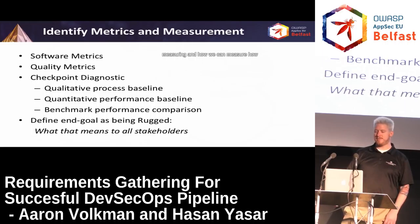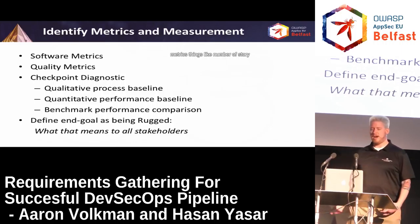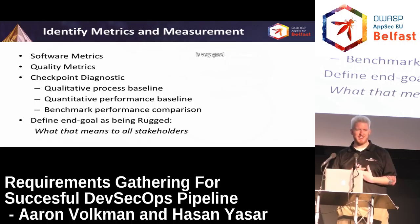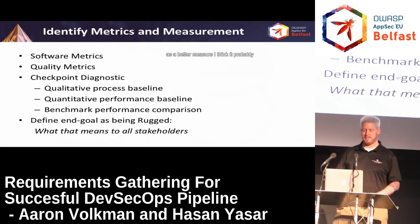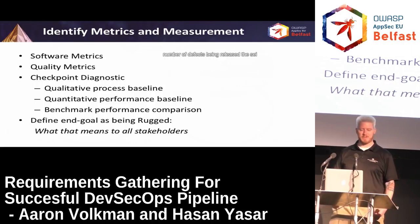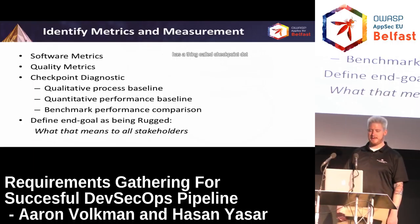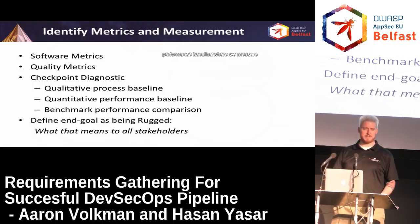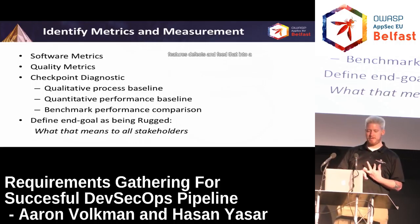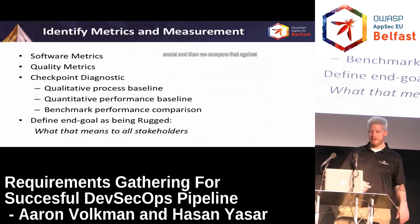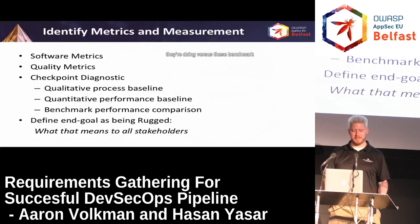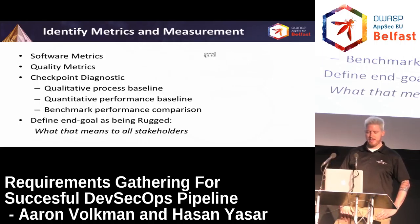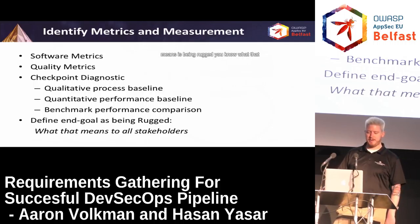We identify metrics and measurement on how we can measure how well we're doing. We look at software metrics — number of story points, lines of code (which I don't think is very good), feature points or story points as better measures. Quality metrics include number of defects being released. SEI has a thing called Checkpoint Diagnostic where we model a qualitative process baseline. We have a quantitative performance baseline where we measure time, speed, number of features, and defects, feed that into a model, and compare against benchmarks gathered from various contexts — so we can let our customers know how they're doing versus benchmark shops we think are doing pretty well. We also define what the end goal means as being rugged to all stakeholders.